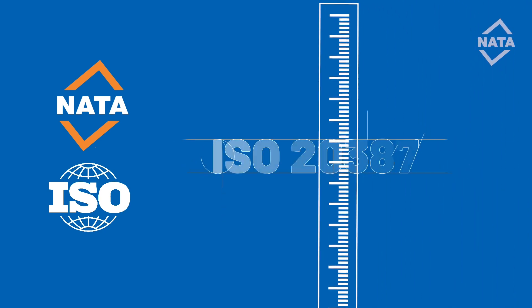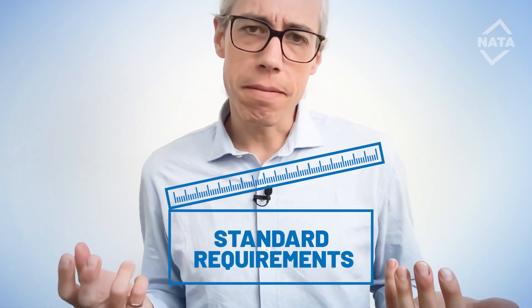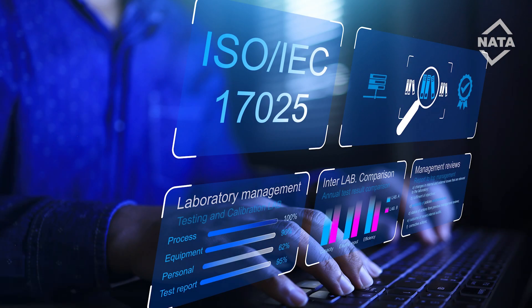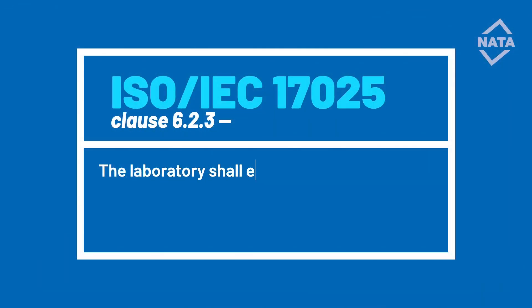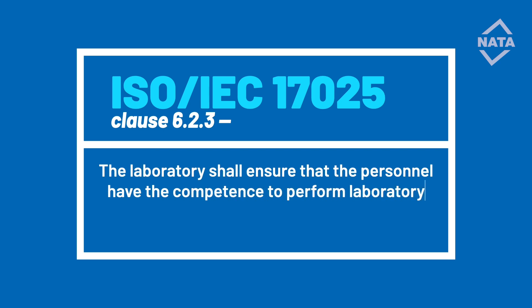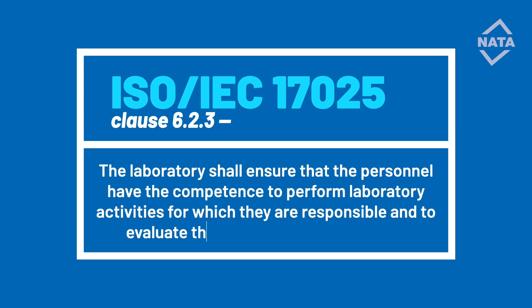Risk-based requirements are baked into NATA's accreditation standards. Requirements in these standards are becoming less prescriptive; instead there's a focus on outcomes and accountability. In ISO/IEC 17025 — the standard against which testing and calibration facilities are accredited — competent personnel must be able to identify and evaluate test results that look wrong. The standard requires that laboratory personnel have competence to evaluate the significance of deviations.